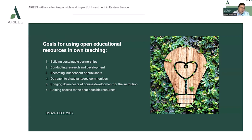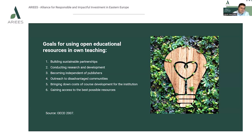First is building sustainable partnership. We have access to own teaching supported by open educational resources. Then we can conduct research and development. Moreover, open educational resources and own teaching may help becoming independent of publishers. Then outreach of disadvantaged communities. The fifth goal is to bring down costs of course development for the institutions. And finally, we expect better access to the best possible resources.